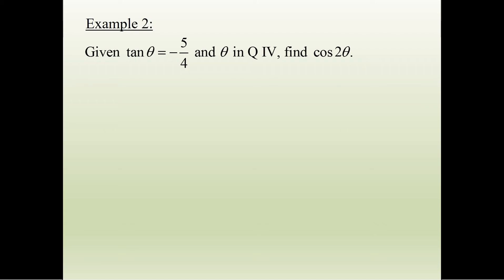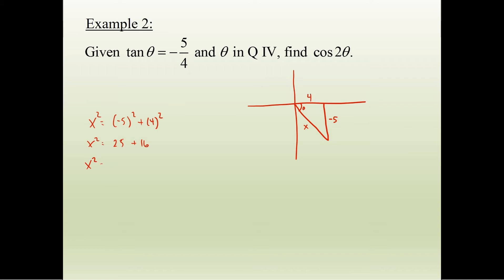Next: given tangent theta equals negative 5/4 and theta is in quadrant 4, find cosine 2 theta. In quadrant 4, tangent is opposite over adjacent, and since it's negative the opposite side is negative 5. Using the Pythagorean theorem: x squared equals negative 5 squared plus 4 squared, so x squared equals 25 plus 16 equals 41. Therefore x equals positive square root of 41, since the hypotenuse is positive.